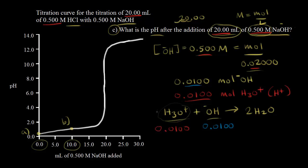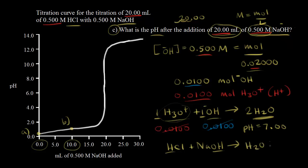Everything is reacting in a one-to-one ratio, so all of the base reacts and completely neutralizes the acid. When that happens, the pH should just be the pH of water, which is 7.00. We could also write this as HCl + NaOH → H₂O + NaCl. We're left with an aqueous solution of sodium chloride, and since Na⁺ and Cl⁻ ions don't interact with water enough to change the pH, the pH equals 7.